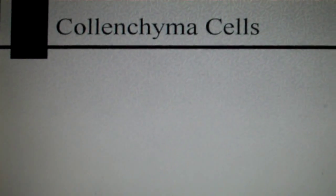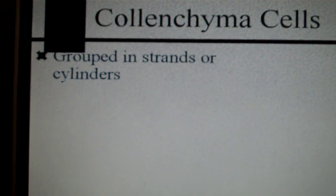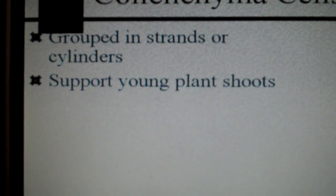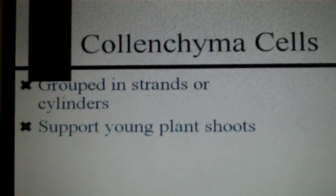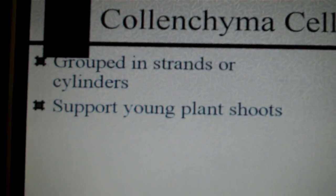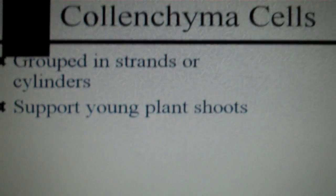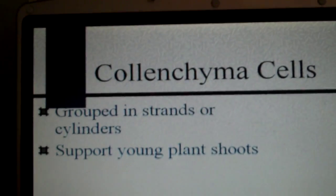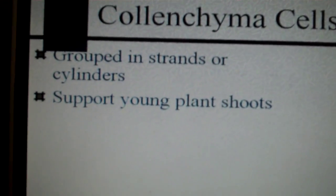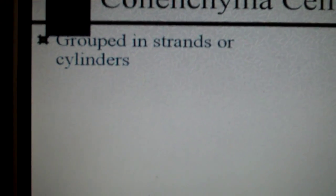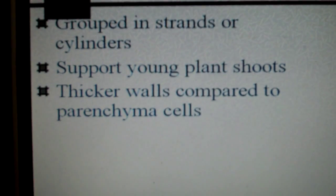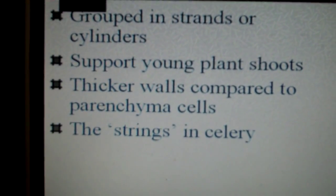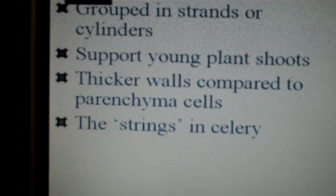Then we have colenchyma cells. These are grouped in strands or cylinders. They support young plant shoots. So when a plant is growing and its apical meristem is increasing in size and height, the colenchyma cells are going to help support the young plant shoots. They have thicker walls compared to parenchyma cells. These are the strings you find in celery.